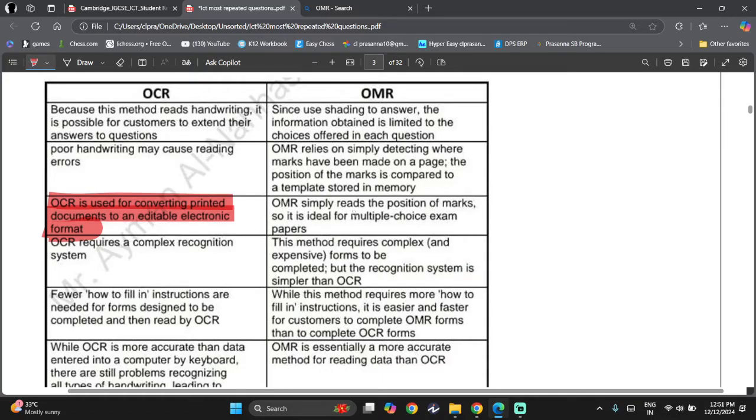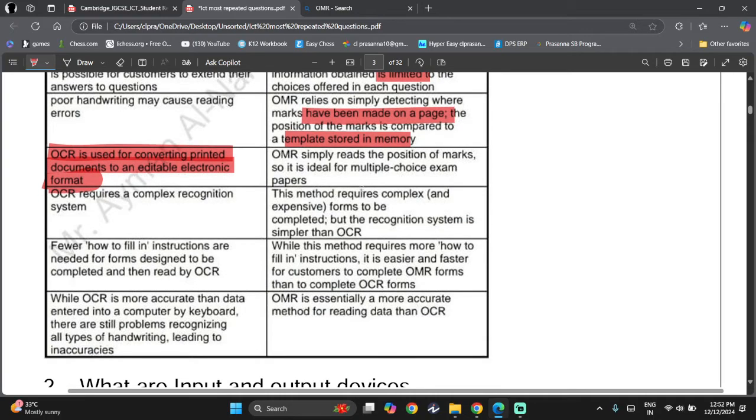So OMR simply reads the position of marks, so it's ideal for MCQ papers. Since using shading to answer, the information obtained is limited because you can't shade more than one and then expect to get more information. OMR relies on simply detecting where the marks have been made on the page. The position of the marks is compared to a template stored in the memory. This method also requires complex and expensive forms to be completed, but the recognition system is simpler than OCR.